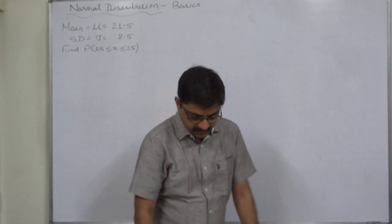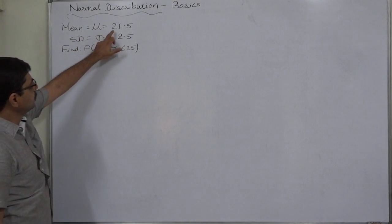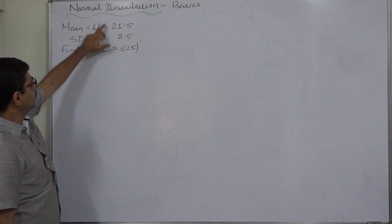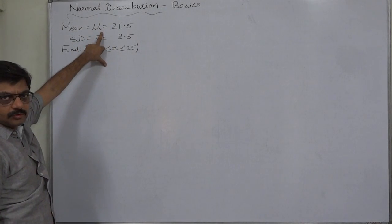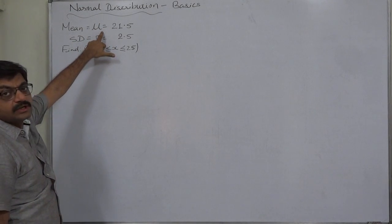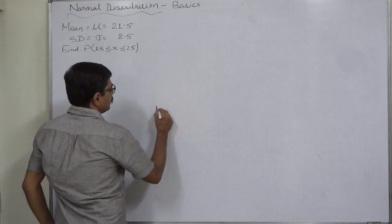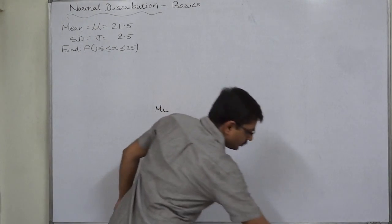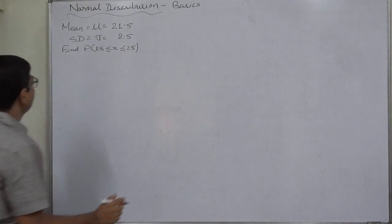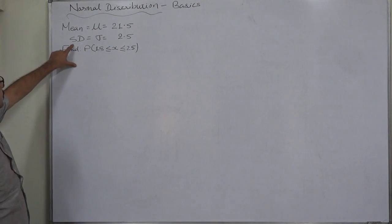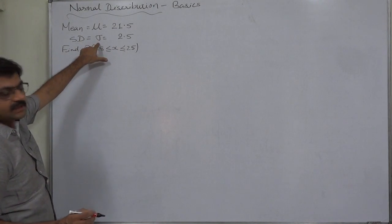Let us take the case in which the mean is given to be 21.5. This symbol for mean, normally used in normal distribution, is known as mu. So mean or mu is 21.5. The standard deviation of the data is 2.5, represented by small sigma.